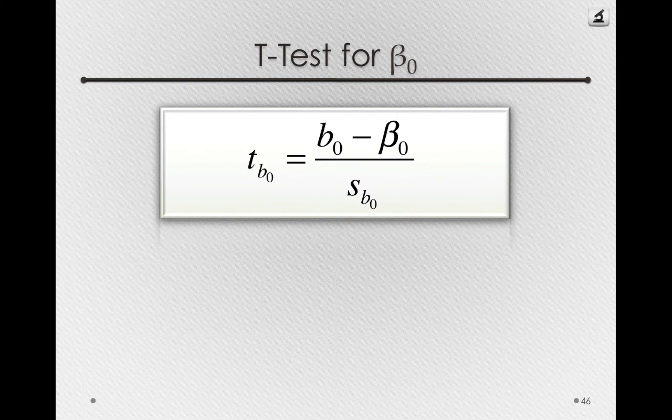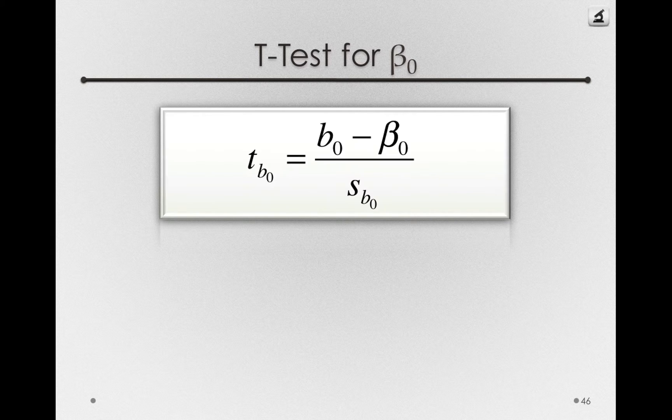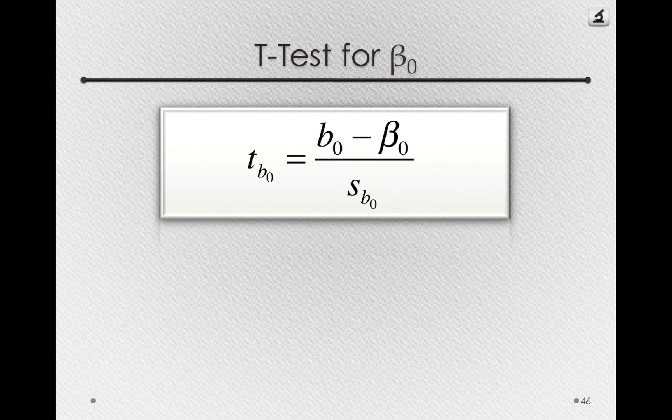The t-test for beta 0 follows the same form as we've seen before. So the sample estimate, B sub 0, minus the population parameter if the null hypothesis is true, divided by the estimated standard error.